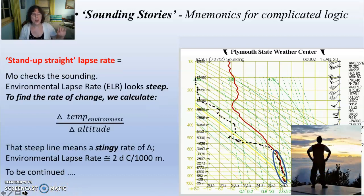Notice that Mo the meteorologist and his stand-up-straight lapse rate at dawn - he's looking out over fog. When he checks out his steep environmental lapse rate, he's reminded that this lapse rate is a change of temperature over change of altitude. He sees there's not much of a change in temperature over altitude here - it's a stingy number. This is actually 2 degrees Celsius over 1000 meters - it's a little number.